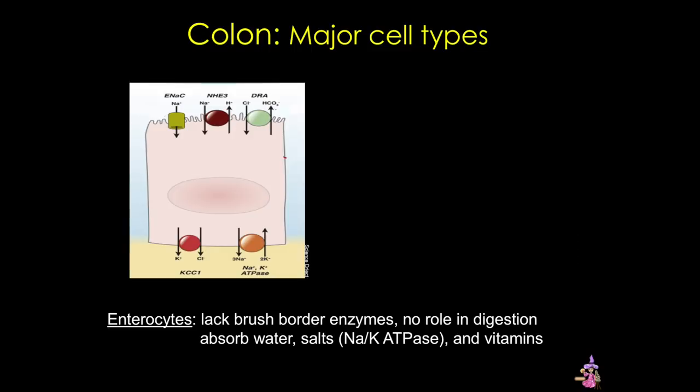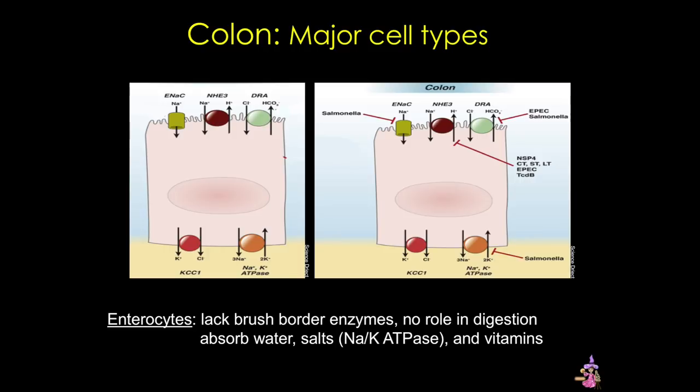All regions of the colon absorb sodium and chloride ions, and this is facilitated by plasma membrane channels such as ENaC and CFTR. Water absorption is passive, following the active transport of sodium. Not surprisingly, many of these channels are targets of different bacteria, viruses, and toxins, including cholera toxin and salmonella. Problems with these channels often lead to diarrhea and other intestinal disease.